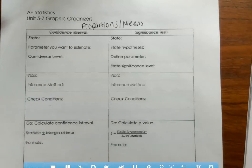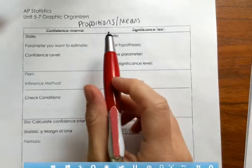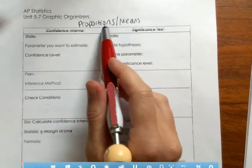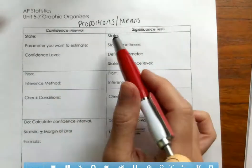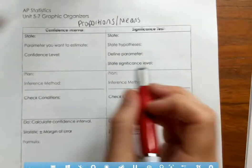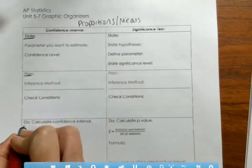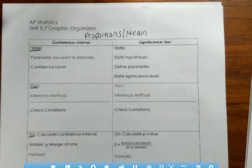Units six and seven were basically confidence intervals and significance tests for proportions and for means. To keep this graphic organizer as organized as possible, we have one column for confidence intervals and one column for significance tests. I'm going to show you the formulas and ideas for both proportions and means — I'll designate proportions with a P and means with an M. Remember, you've got four main pieces: state, plan, do, and conclude. Make sure you address all four parts when asked to perform a confidence interval or significance test.